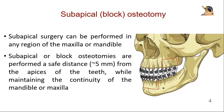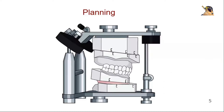Subapical surgery can be performed in any region of the maxilla or mandible. Subapical or block osteotomies are performed a safe distance — i.e., 5 mm from the apices of the teeth — while maintaining the continuity of the mandible or maxilla. Proper planning for subapical osteotomy should be done before the surgical procedure.